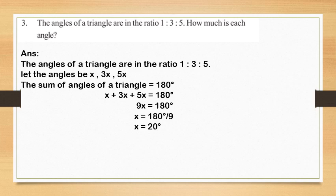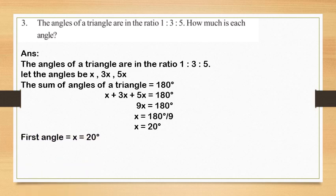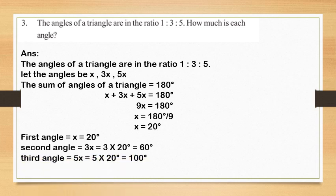Substitute X equal to 20 degrees and find each angle. First angle: X equal to 20 degrees. Second angle: 3X; substitute X equal to 20, we get 3 into 20 degrees equal to 60 degrees. Third angle: 5X, which is equal to 5 into 20 degrees, that is 100 degrees.